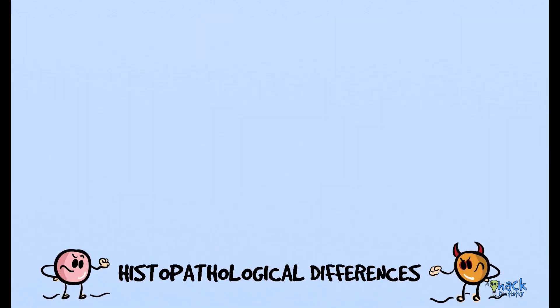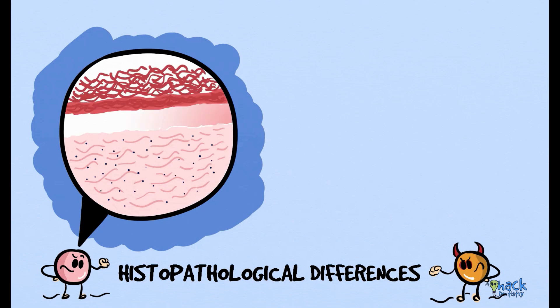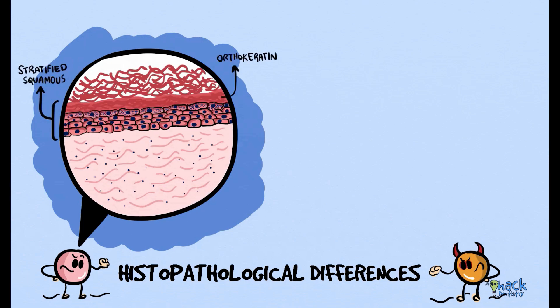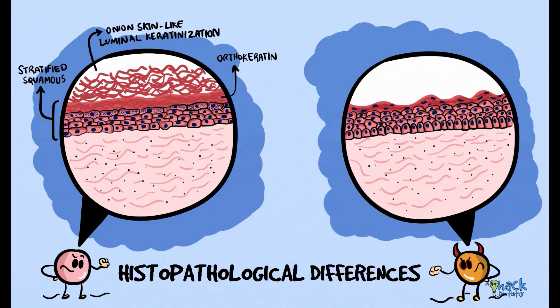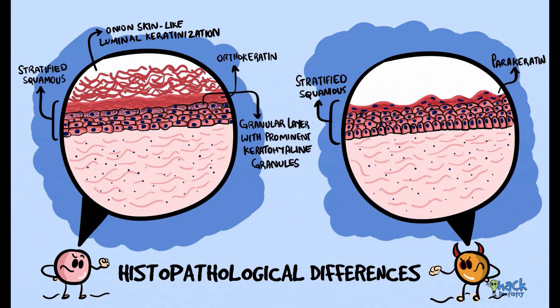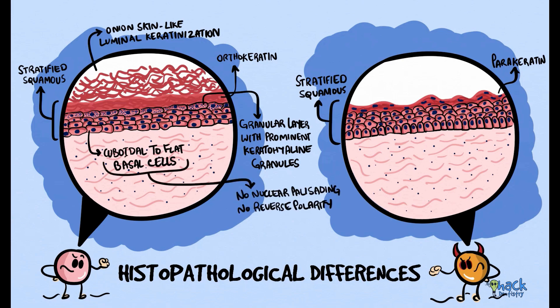Under the microscope, ortho-keratinized odontogenic cysts show quite a few differences from odontogenic keratocysts. The epithelial lining is orthokeratinized stratified squamous epithelium and has onion skin-like luminal keratinization. This is in contrast to odontogenic keratocyst, which has a parakeratinized lining. Also, ortho-keratinized odontogenic cysts have a granular layer with prominent keratohyalin granules and cuboidal to flat basal cells with no nuclear palisading or reverse polarization.